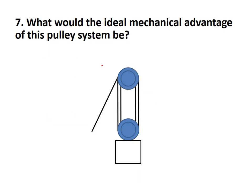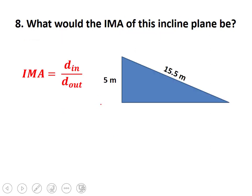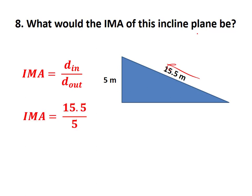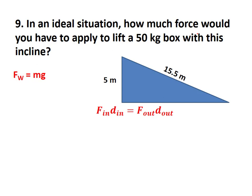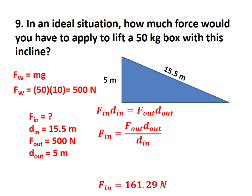What's the ideal mechanical advantage of this pulley system? Count the strands going up: 1, 2, 3, 4 — so IMA = 4. The strand you pull with doesn't count since it isn't supporting the object's weight. For an inclined plane problem: IMA = distance_in / distance_out = 3.1. In the ideal situation, plugging in the numbers gives an input force of 161.29 N required.